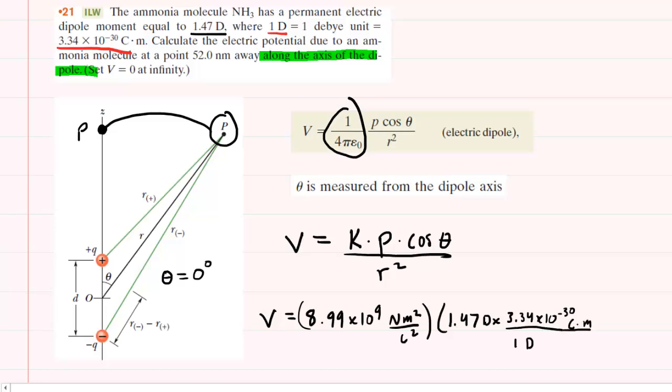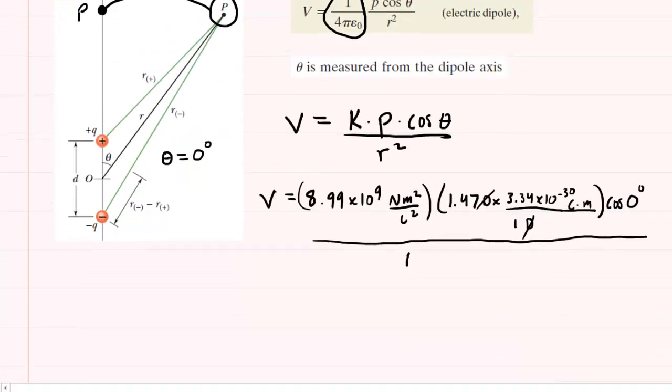When you set it up in this fashion, the Debye's will cancel out, times the cosine of the angle, which again is 0 degrees. And then this is all divided by the distance given squared. The distance here is 52 nanometers. Don't forget that because it's in nanometers, you have to multiply that by 10 to the minus 9 to convert it into the standard unit of meters, and then square it as well.